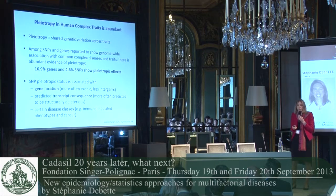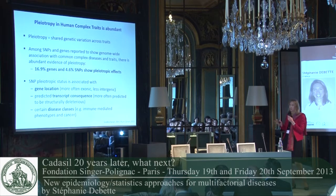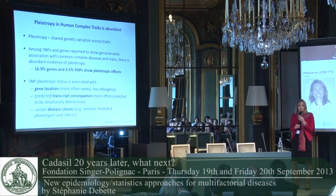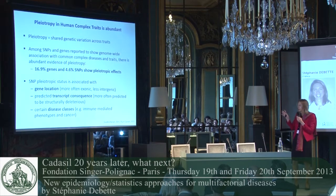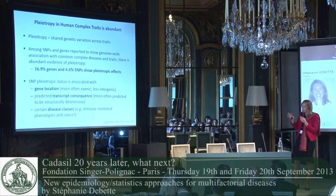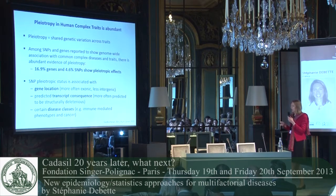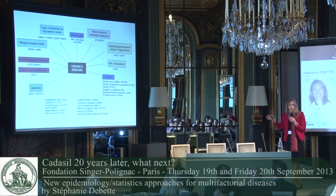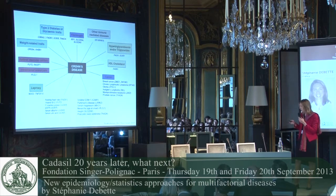One interesting observation that came out of genome-wide association studies is the amount of pleiotropy across complex diseases. Pleiotropy corresponds to shared genetic variation across traits or diseases. It turns out that 16% of the genes identified through GWAS are shared across at least two different traits or diseases, and about 4% of the SNPs are shared. This pleiotropy differs according to the location of the gene and the potential transcriptional consequences, and is stronger for immune-related diseases or cancer. Here's an example of the major pleiotropy of genes identified as risk factors for Crohn's disease.